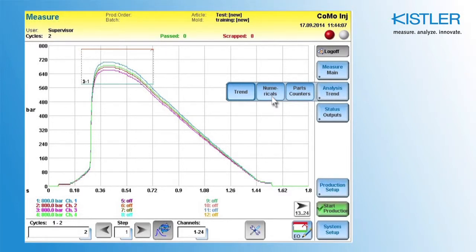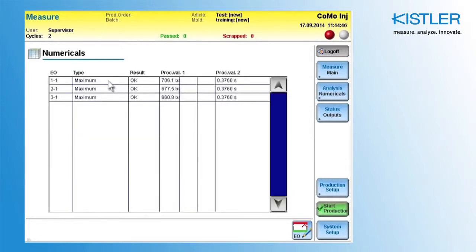First, let's look at Numerical Trend. Here you can view all the evaluation objects in a table. Here you can see a description of the object.